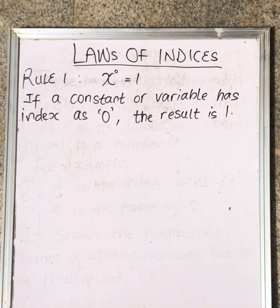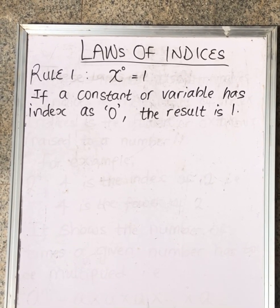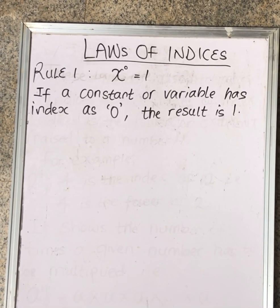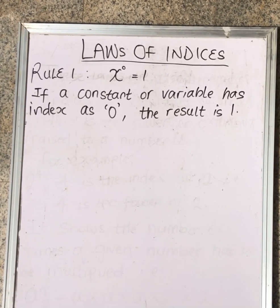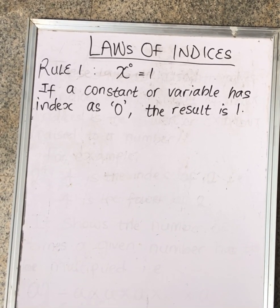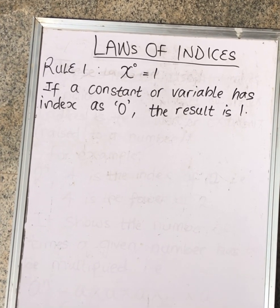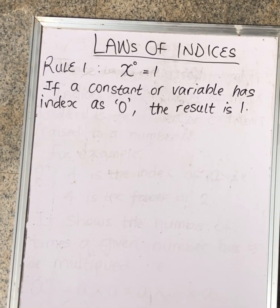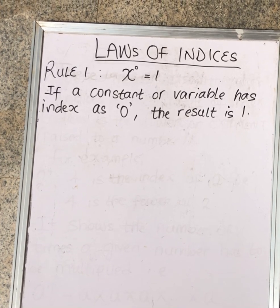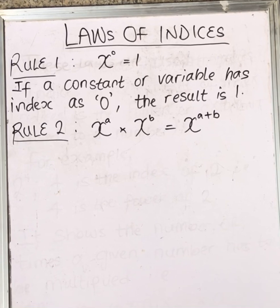For today, we want to know the laws — the rules we have to follow to solve indices. Rule number one says anything raised to power 0 is 1. X raised to power 0 is 1. X in this case could be anything — representing a stone, goats, whatever — raised to the power of zero will always give us 1. So if a constant or variable has an index of 0, the result is 1.